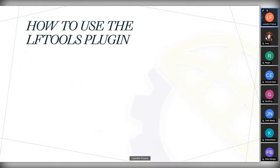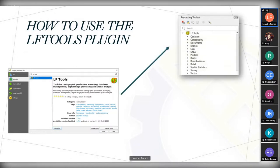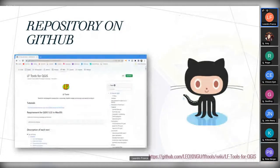How to use the LF-Tools plugin? It's very simple — just install from the official QGIS repository. The 66 tools then appear in the processing toolbox. And the 16 functions appear together with the native functions of QGIS and other custom functions, as we can see in the figure. Now let's take a look at the LF-Tools wiki on GitHub.